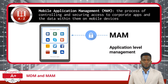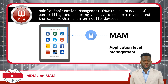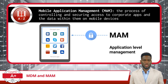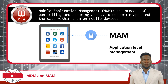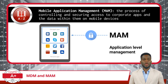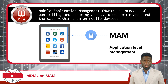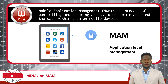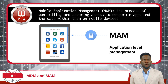Moving on, we have Mobile Application Management, or MAM. This is the process of controlling and securing access to corporate applications and the data within them on mobile devices. Mobile Application Management software is dedicated to the deployment, administration, and security of mobile apps on corporate and personally owned mobile devices. Unlike Mobile Device Management, which controls the entire device, Mobile Application Management focuses specifically on managing and securing corporate applications.